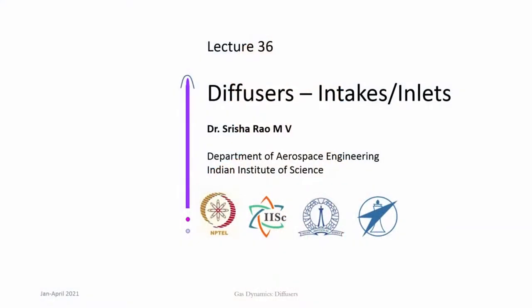We are looking at varying area ducts. Until now we have discussed equations of varying area ducts and nozzle operation. The other kind of duct where we find compressible flow with many applications is the diffuser. In a nozzle, flow is accelerated, while in a diffuser, flow is decelerated. Typical examples of diffusers are intakes of air-breathing engines, wind tunnels, and other applications where flow velocity needs to be reduced and pressure has to be recovered.